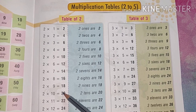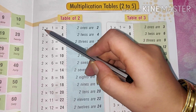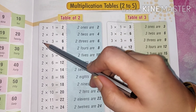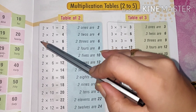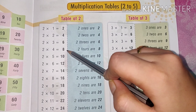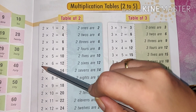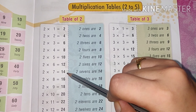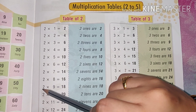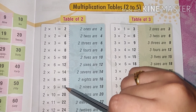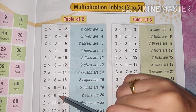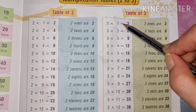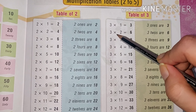We will learn again. Two ones are two, two twos are four, two threes are six, two fours are eight, two fives are ten, two sixes are twelve, two sevens are fourteen, two eights are sixteen, two nines are eighteen, two tens are twenty.